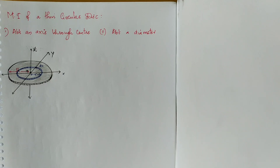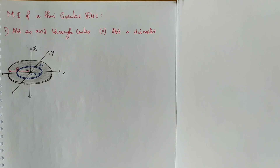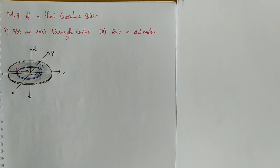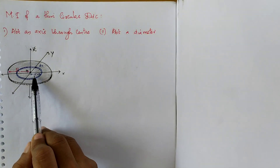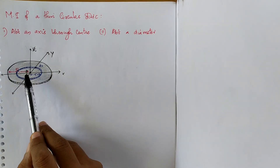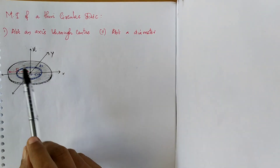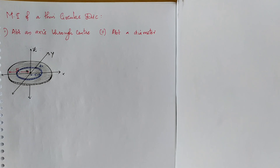Hi guys, in this video we will see how to find the moment of inertia of a thin circular disc. We assume the disc to be made up of a large number of concentric thin rings of different radii, which can vary from 0 to capital R, the entire radius of the disc.